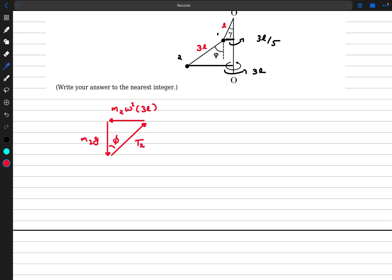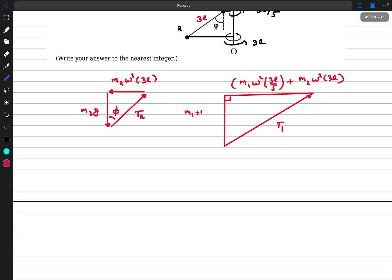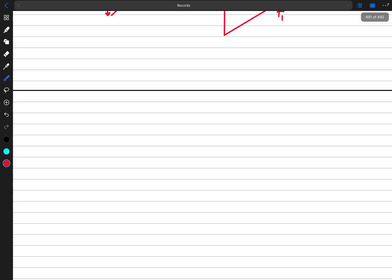Now what we'll do is we'll draw the force triangle for both two and one taken together. So in this case, t1 would be external force. Then we have force of gravity acting on both the balls, we'll consider them as m1 plus m2 into g. And then we'll consider the horizontal centrifugal force on both of them and we'll add them together. So now we'll draw the force triangle with these three forces. So that will also be a right triangle. On this side we'll have the tension force t1. And here we'll have the total centrifugal force on one and two both. So that would be m1 omega squared 3L by phi plus m2 omega squared 3L. And on the vertical side we'll take their combined gravity, which is m1 plus m2 into g. And t1 makes an angle gamma with the vertical.